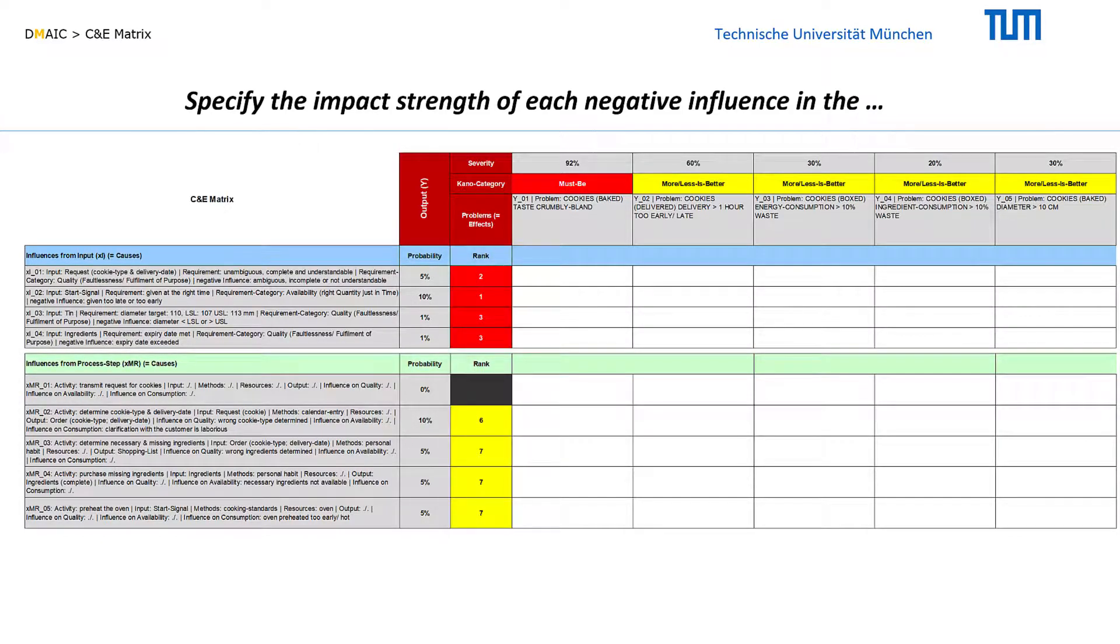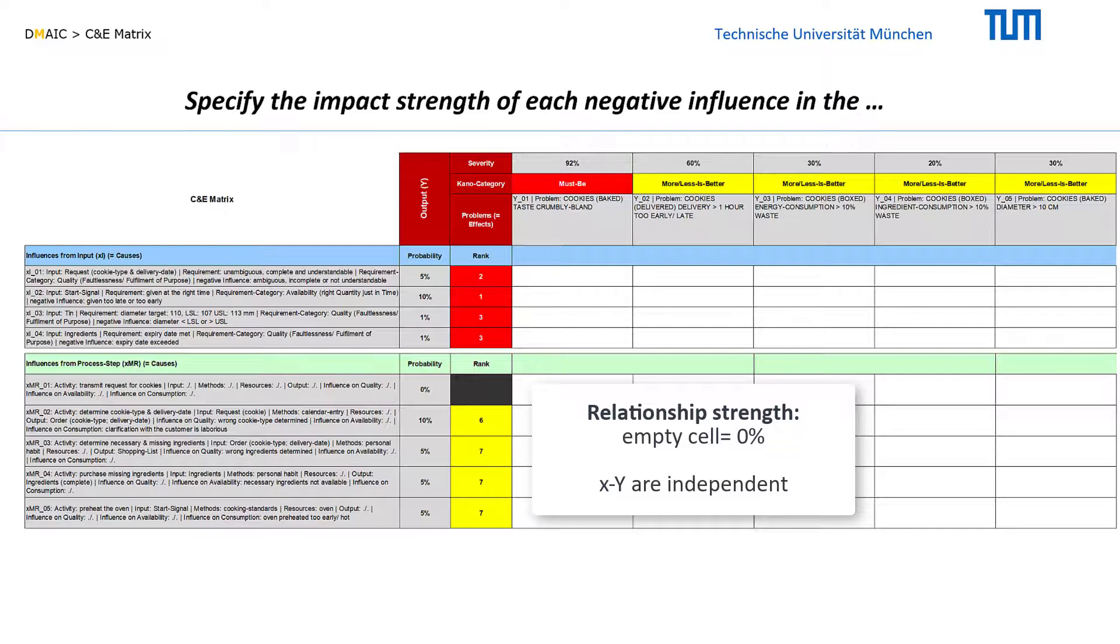By default, all cells that relate influences and problems are empty. This means that the respective influence has no effect on the respective problem, corresponding to a 0% determination of the certain problem by the certain influence.